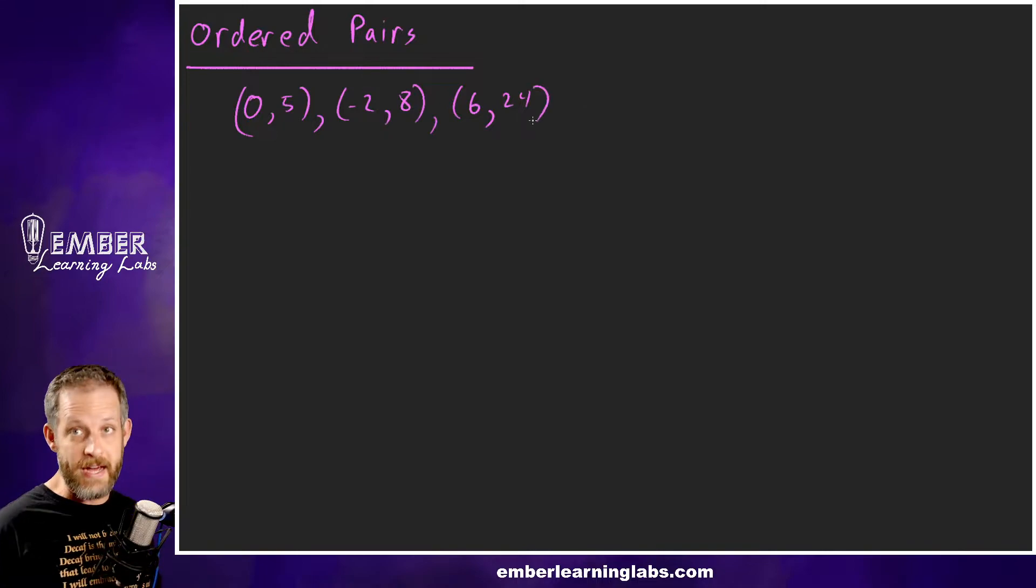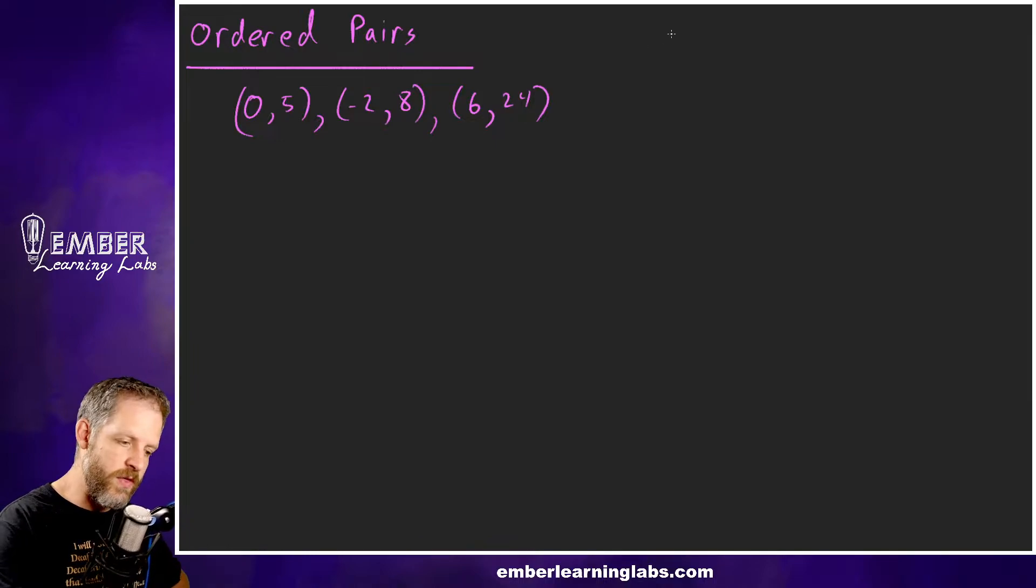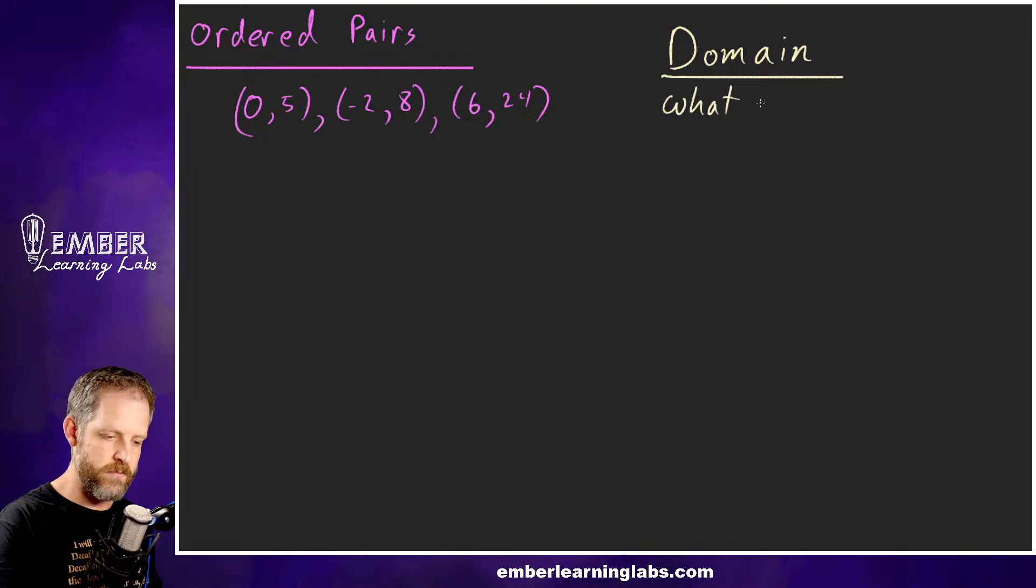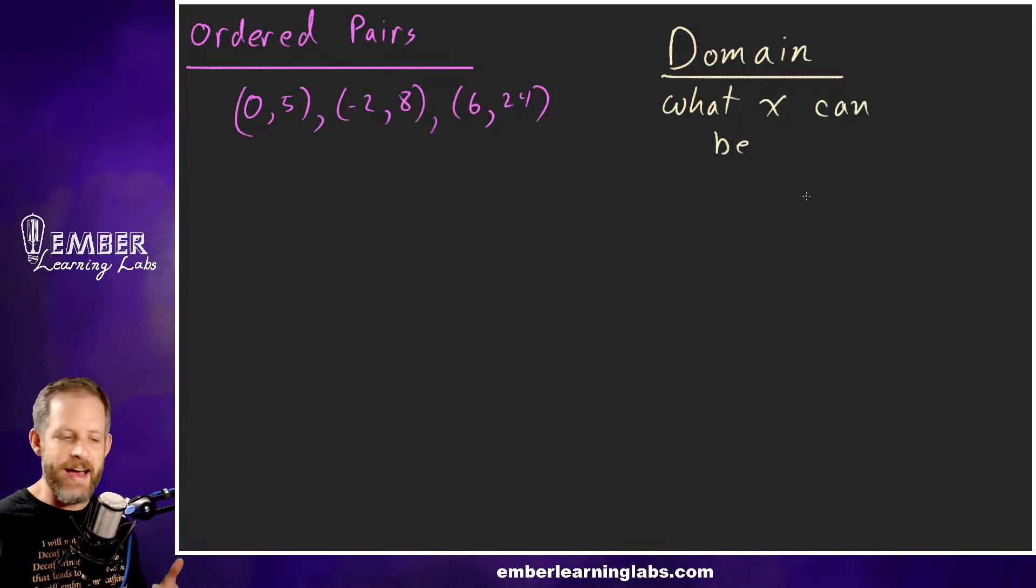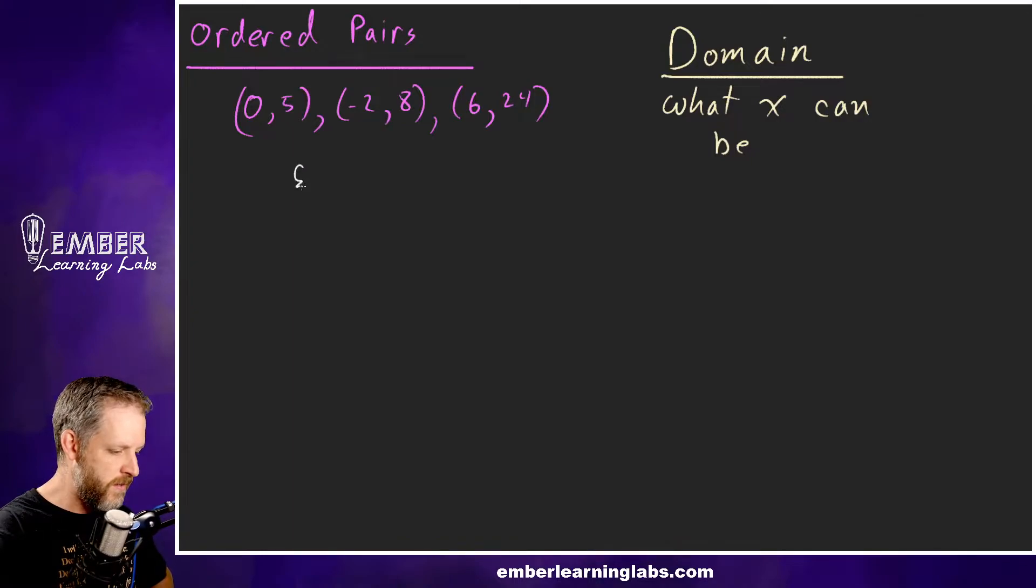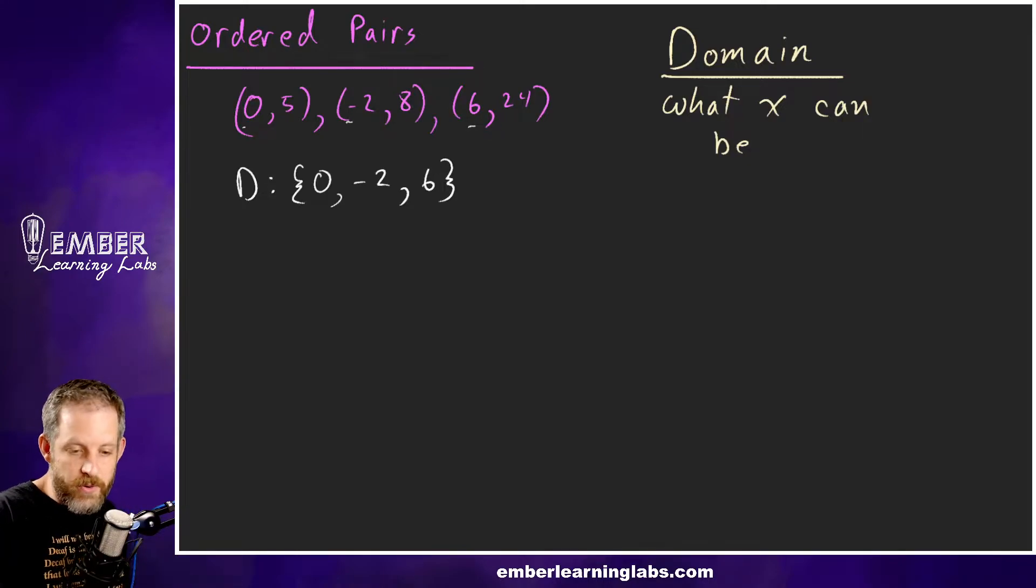So the title of this video is domain and range. The domain of this little three-point function is what x can be. There's other ways to say that—you could say it's the list of all the independent variables, the inputs into the function. So the domain for this particular function is {0, -2, 6}, the list of all these x's.